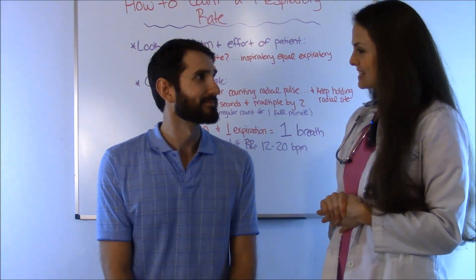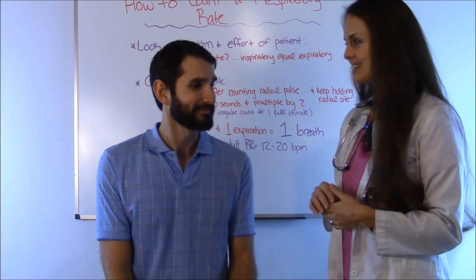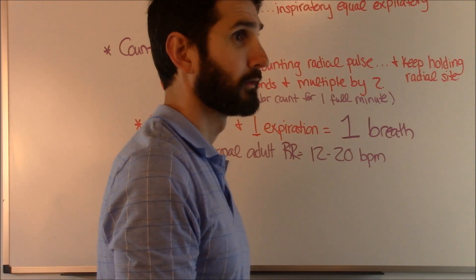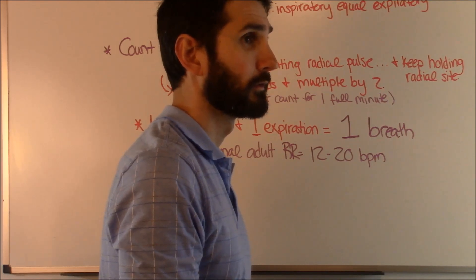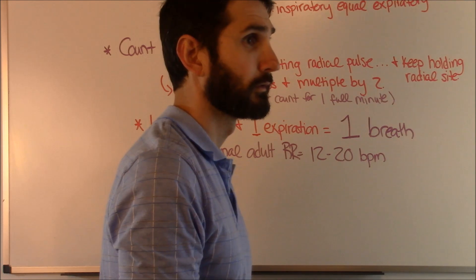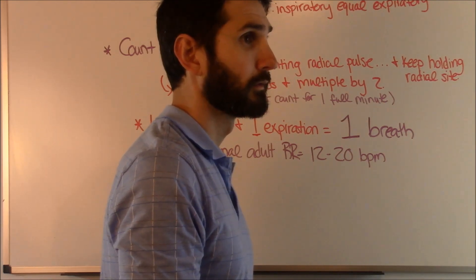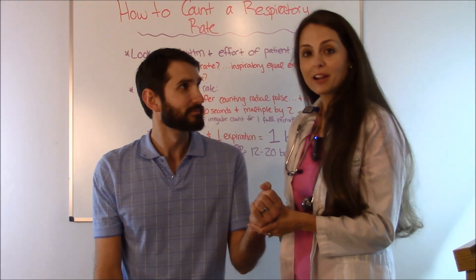Now let me show you how to count respirations on a person. Hi, my name is Sarah and I'm going to be your nurse today — I'm going to take your vital signs. Is that okay with you? Absolutely. I've performed hand hygiene and we're going to get his vital signs. Let me see your wrist and I'm going to feel your pulse. So your pulse rate was 70 and your respiration rate was 20.